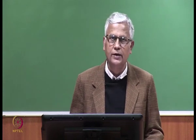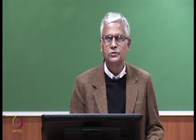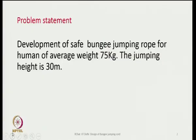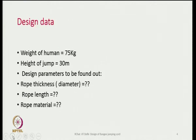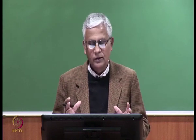Today's discussion is on bungee jumping cord. It is a force product. We need to develop a safe bungee jumping rope or cord for a human of average weight 75 kg and the jumping height is 30 meters. What we are going to discuss is based on a research paper written by J.W. Kuckelman and M. Hubbard, titled 'Bungee Jumping Chord Design Using Simple Model.' This is a very interesting research paper that gives you a real idea of how to design a product like this.